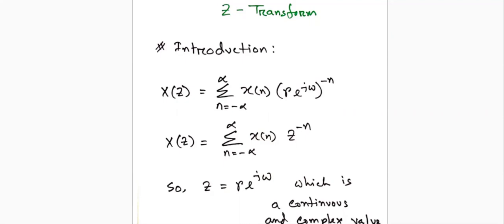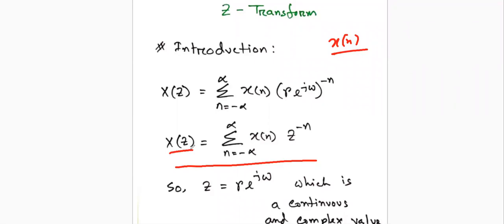Let's start with the definition. If we have any signal x(n) and we want to do the Z-transform, the expression is the summation of x(n)·z^(−n) for n from minus infinity to plus infinity. This converts the signal to the Z-domain. We will discuss each part graphically one after another.